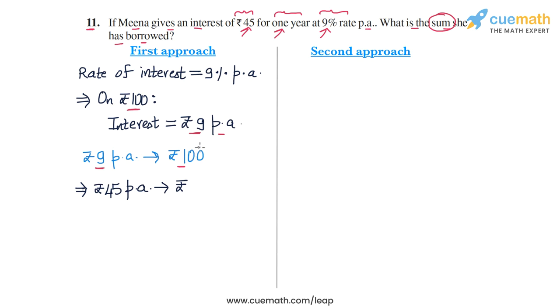How much will this be? We will take 100 divided by 9 and multiply it by 45. So this will be rupees 100 divided by rupees 9 into rupees 45. This is how we can calculate the principal for the interest amount of rupees 45 in one year.